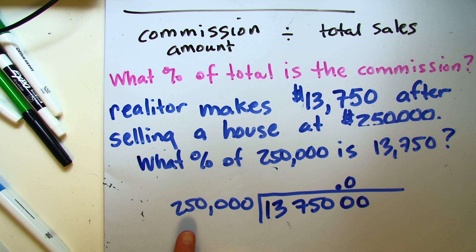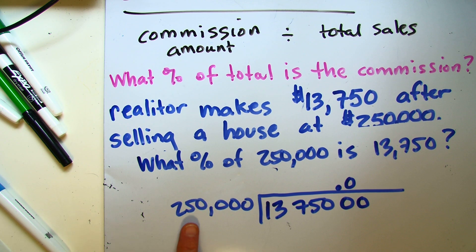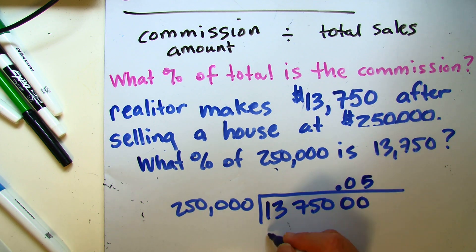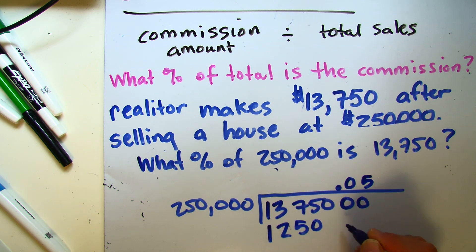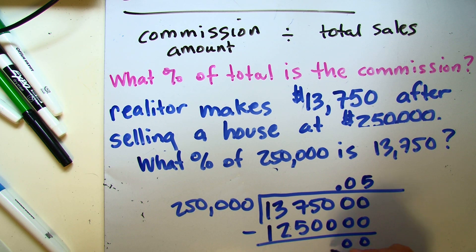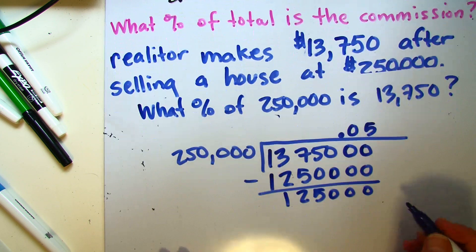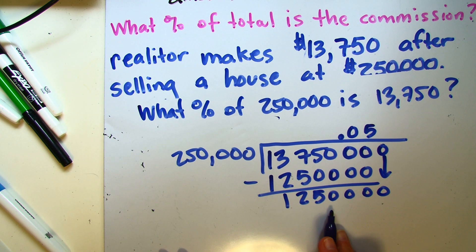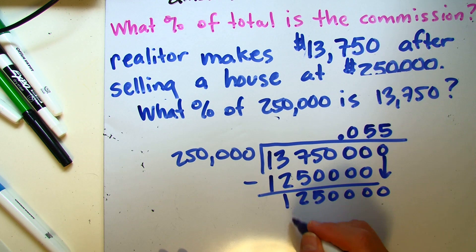Two hundred fifty thousand times four gives me one million. Adding another two hundred fifty thousand gives one million two hundred fifty thousand. So five times two hundred fifty thousand gives me one million two hundred fifty thousand. When I subtract, my leftover is one hundred twenty five thousand. I'm going to add another zero and bring that down. Now I'm back at one million two hundred fifty thousand, and it's going to go in exactly five times.